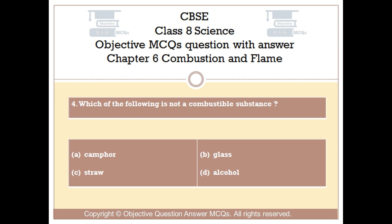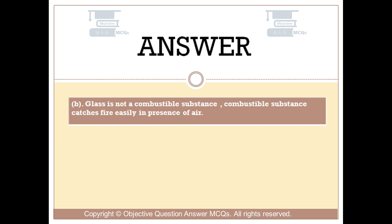Question number 4: Which of the following is not a combustible substance? Option A: camphor. Option B: glass. Option C: straw. Option D: alcohol. The right answer is Option B. Glass is not a combustible substance. Combustible substances catch fire easily in the presence of air.